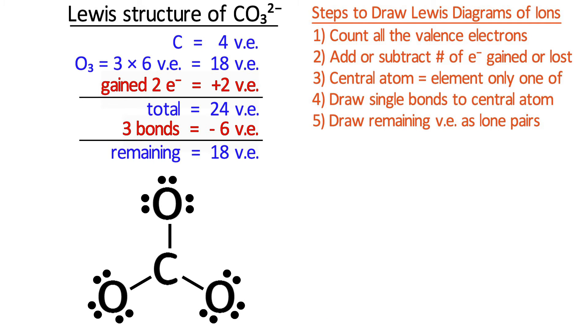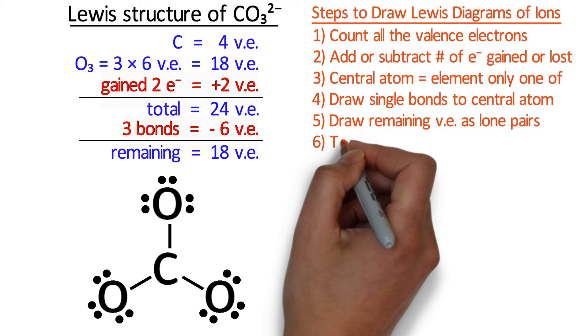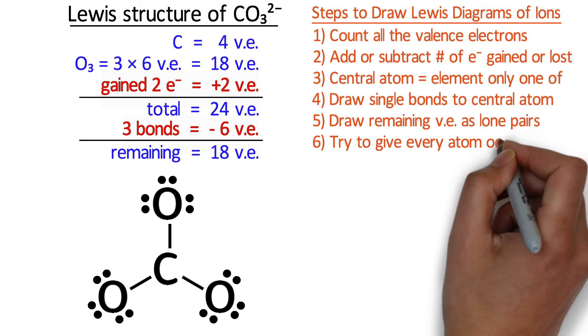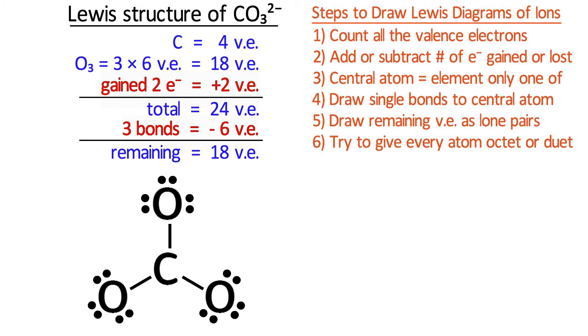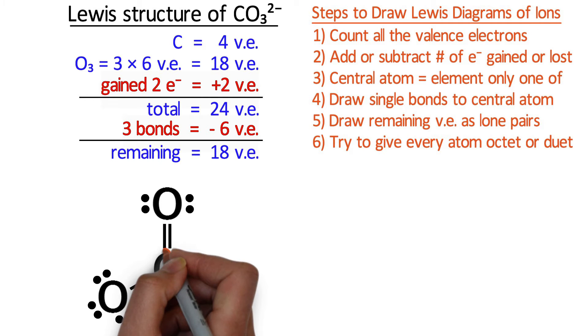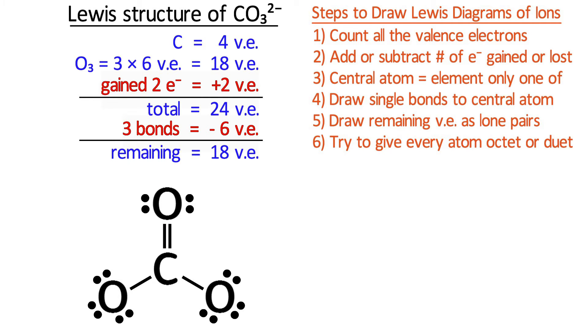Next, we notice that carbon does not have an octet, so we need to turn lone pairs into double or triple bonds to fix that. In this case, because carbon already has 6 valence electrons, it only needs one additional bond. Now, every atom has 8 valence electrons. This is the correct structure, although in reality carbonate does exhibit resonance, which you can learn about in my video Resonance Made Easy.